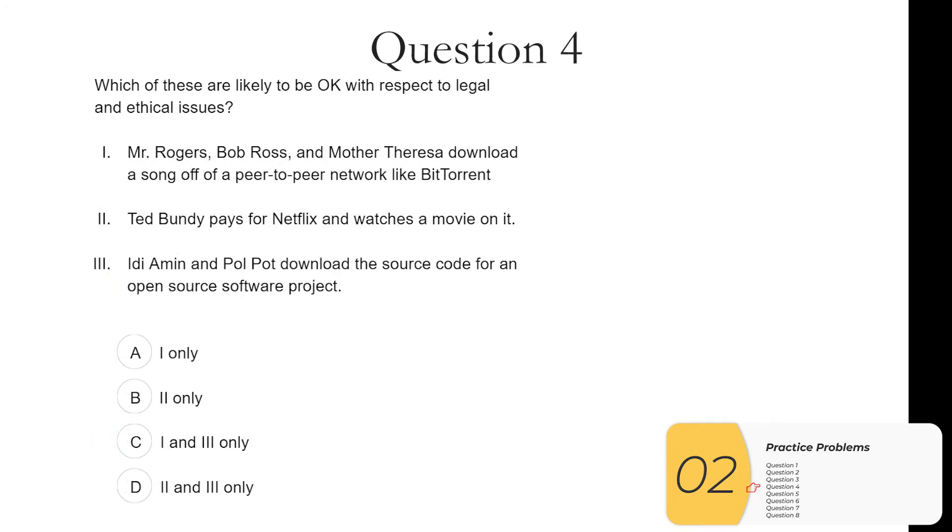Four. Which of these are likely to be okay with respect to legal and ethical issues? One. Mr. Rogers, Bob Ross and Mother Teresa download a song off a peer-to-peer network like BitTorrent. So the idea here is that no matter how good Mr. Rogers is, Mr. Rogers cannot do something that's illegal. So A is not okay with respect to legal and ethical issues. Two. Ted Bundy, notorious mass murderer, pays for Netflix and watches a movie on it. As awful as Ted Bundy is, this is legal. So this action by itself is okay with respect to legal and ethical issues.